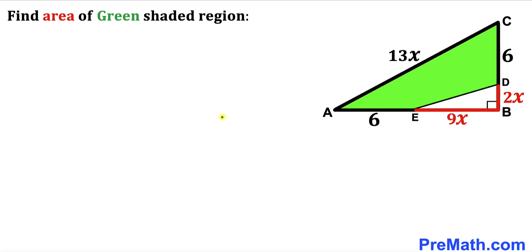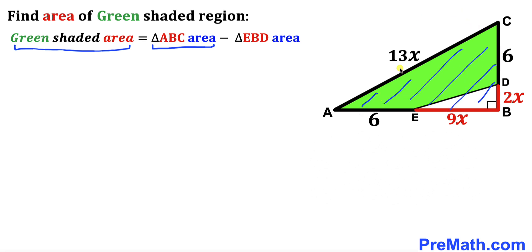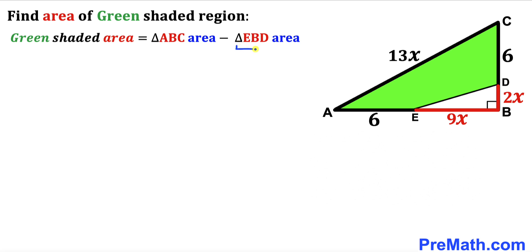Let's get started with an observation. The green shaded area is going to be equal to the area of the big right triangle ABC minus the area of the small right triangle EBD.